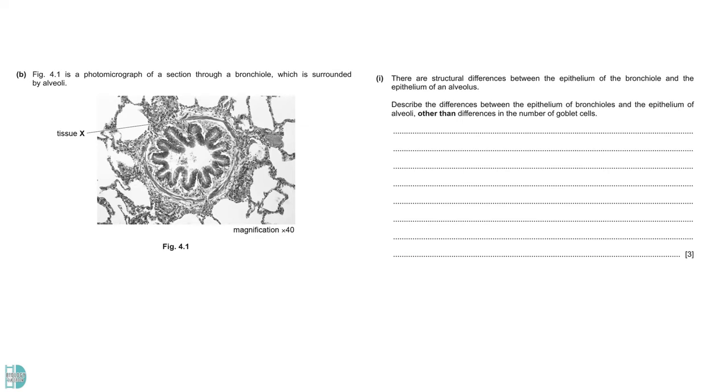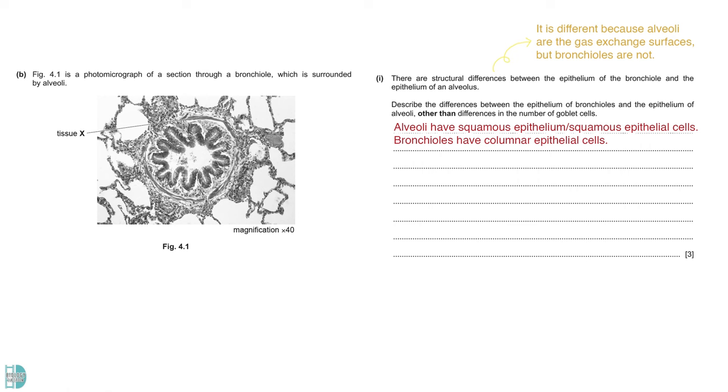Figure 4.1 is a photomicrograph of a section through a bronchiole which is surrounded by alveoli. The first question wants you to describe the differences between the epithelium of bronchioles and the epithelium of alveoli other than differences in the number of goblet cells. Since alveoli is a gas exchange surface, it has squamous epithelium or squamous epithelial cells. Bronchioles are not the surface for gas exchange. It has columnar epithelial cells. Any description of the appearance of the cells will give you a mark as well. Besides that, bronchioles have ciliated epithelium, while alveoli do not. You can also get one mark if you mention about the surfactant cell which is also found in alveoli.